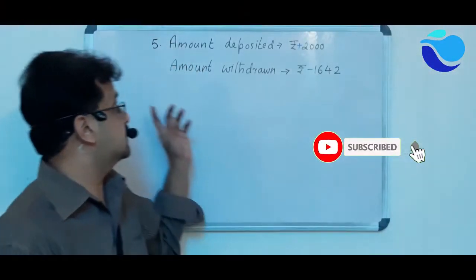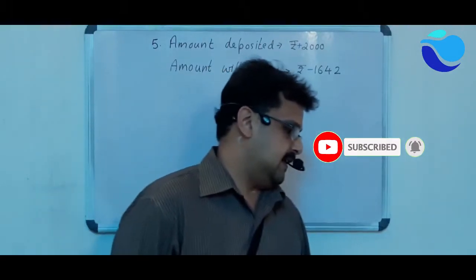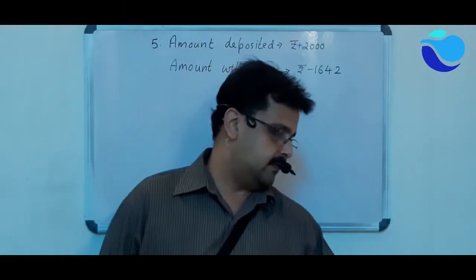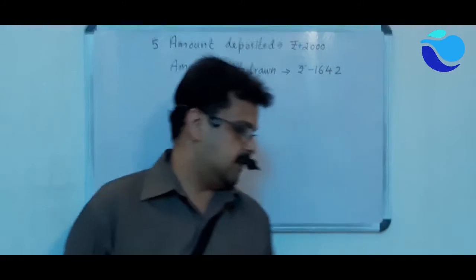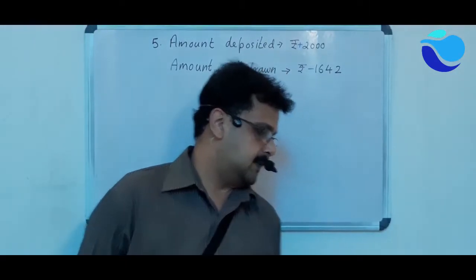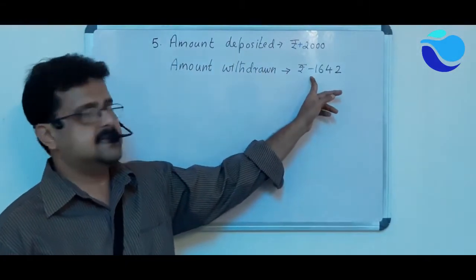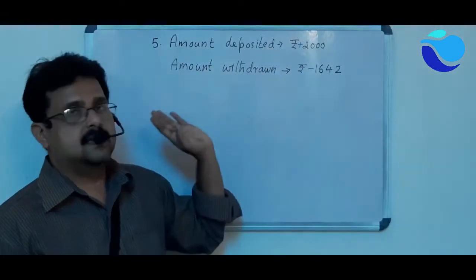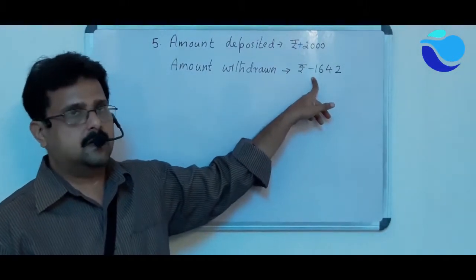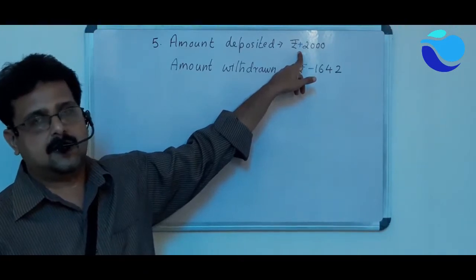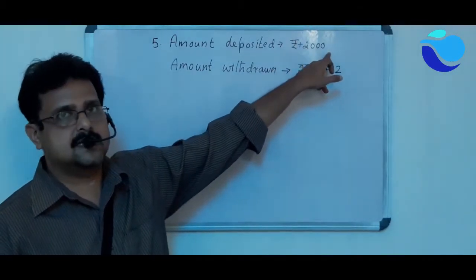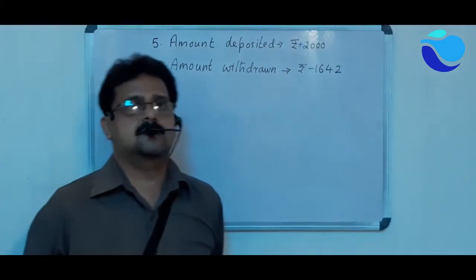First let us solve question number 5. Mohan deposits Rs. 2000 in a bank account and withdraws Rs. 1,642 from it the next day. If withdrawal of amount is represented by a negative integer, then how will you show the amount deposited? If withdrawal is negative, deposit will be positive. So we represent amount deposited as plus 2000 and amount withdrawn as minus 1,642.